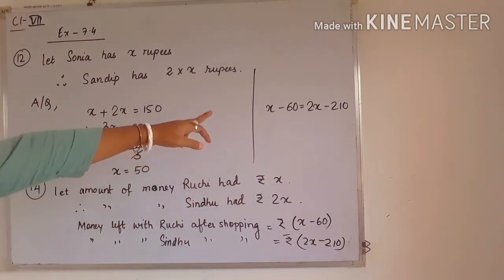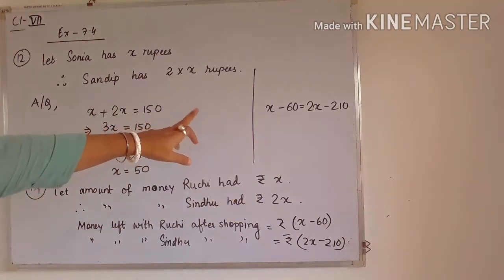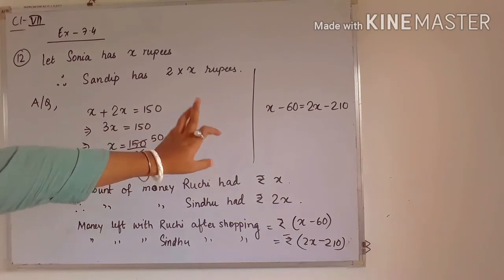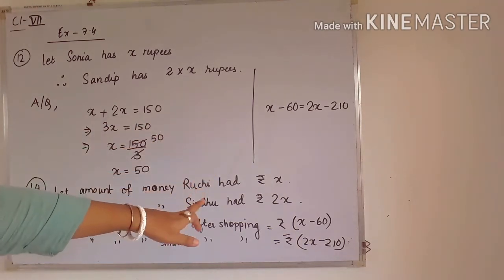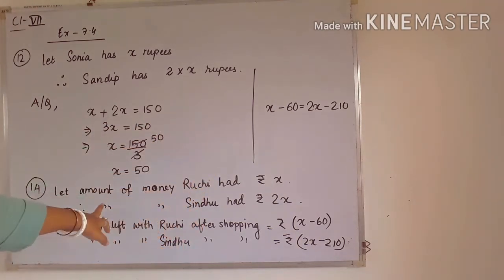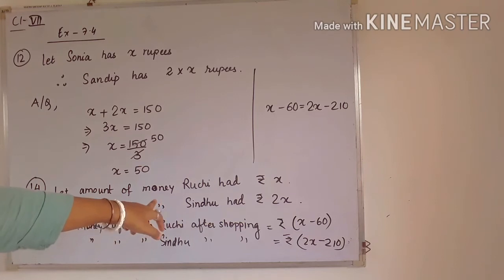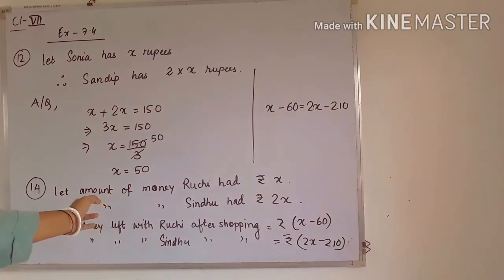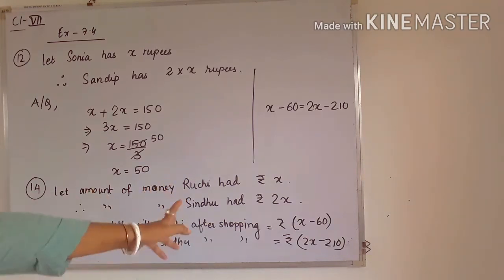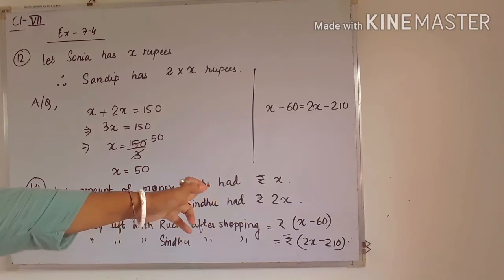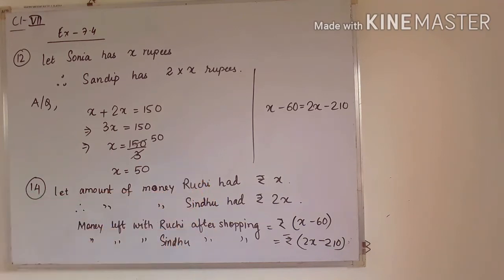After finding the value of x, you can also find 2x, which is the amount of money Sindhu had earlier. That will be double of x.